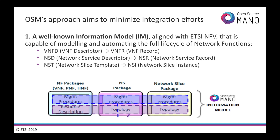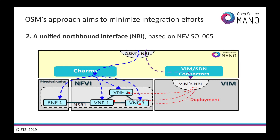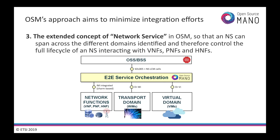OSM aims to minimize integration efforts and achieves this by, first, implementing a well-known, rich information model that allows for enhanced automation of VNFs, network services and network slices. Second, it provides a standard but extended NBI interface that lets operators or OSS systems launch network services that are instantiated and then automatically provisioned. Third, it extends the concept of network service beyond the data center and throughout transport domains in order to implement virtual, physical, or hybrid network functions in an end-to-end fashion across multiple data centers and including their interconnections.